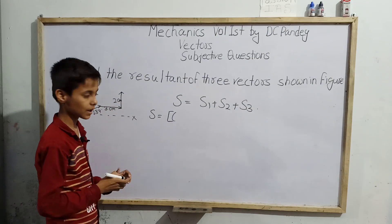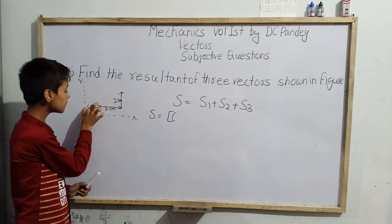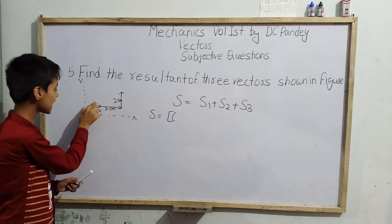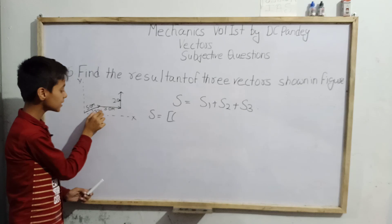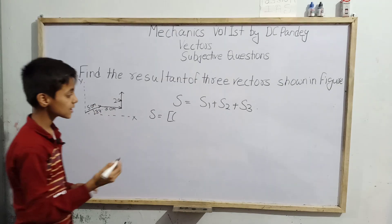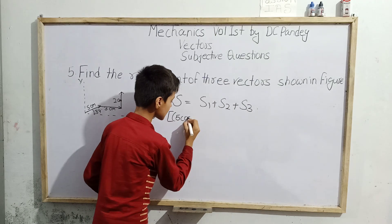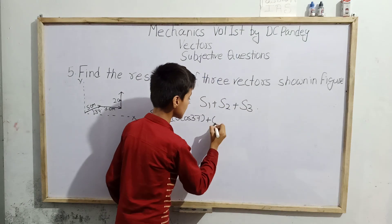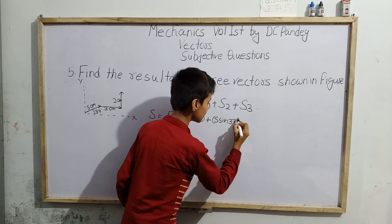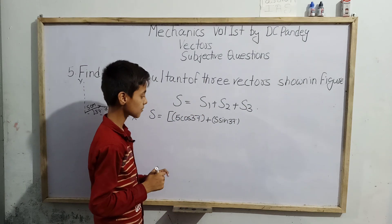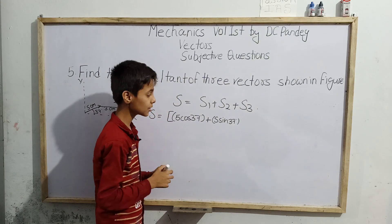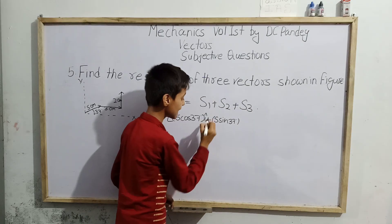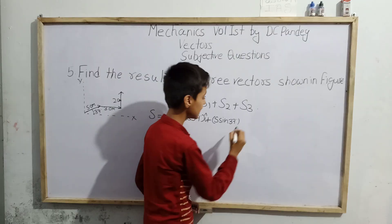For the five-meter vector at 37 degrees, first we'll do cos 37 degrees multiplied by five meters, then add sin 37 degrees multiplied by five meters. So this becomes: five cos 37° plus five sin 37°. We have to place unit vectors — let us put i-hat with five cos 37° and j-hat with five sin 37°.